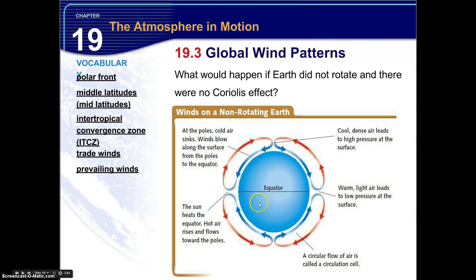Now the sun heats the equator. Hot air rises and flows toward the poles. This circulation is called a circulation cell. Now the cool, dense air leads to high pressure at the surface. And the warm, light air is low pressure at the surface. So this is what it would look like if there were no Coriolis effect. It would be one large circulation cell in each hemisphere.